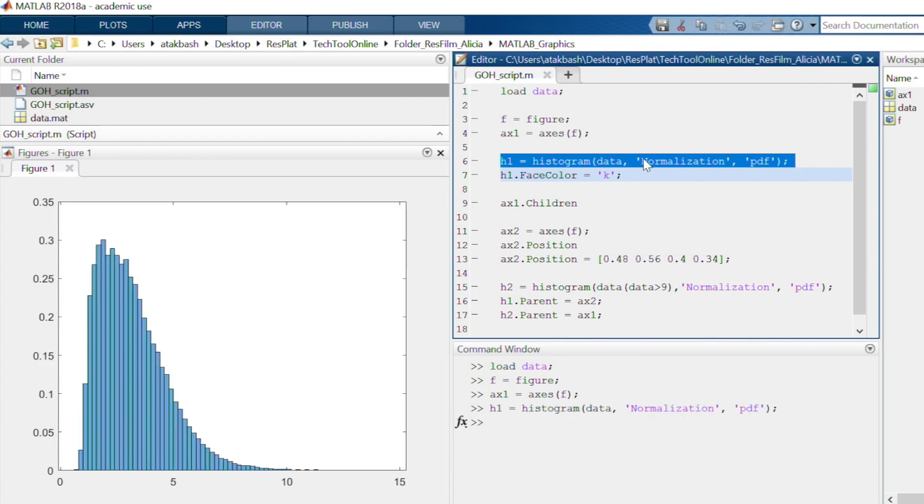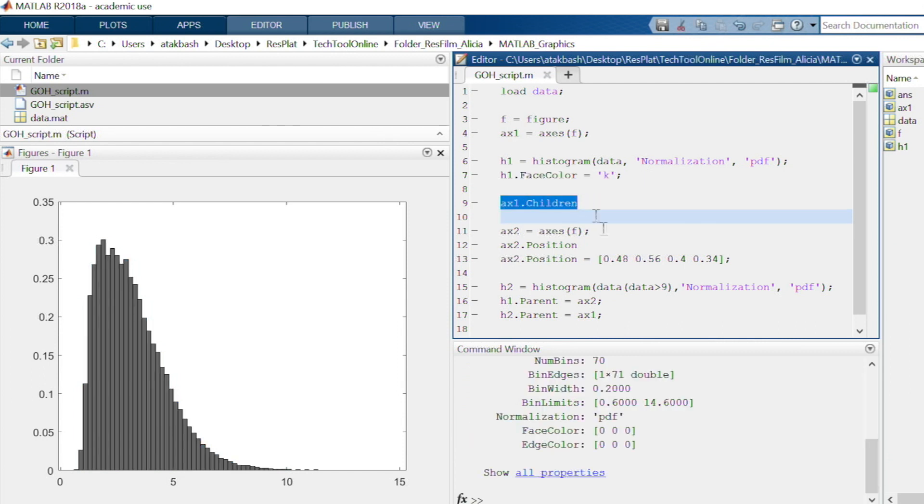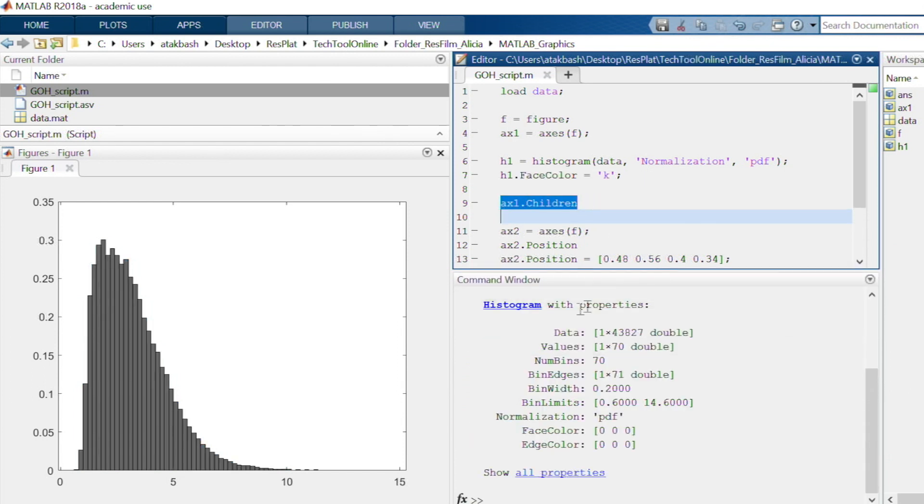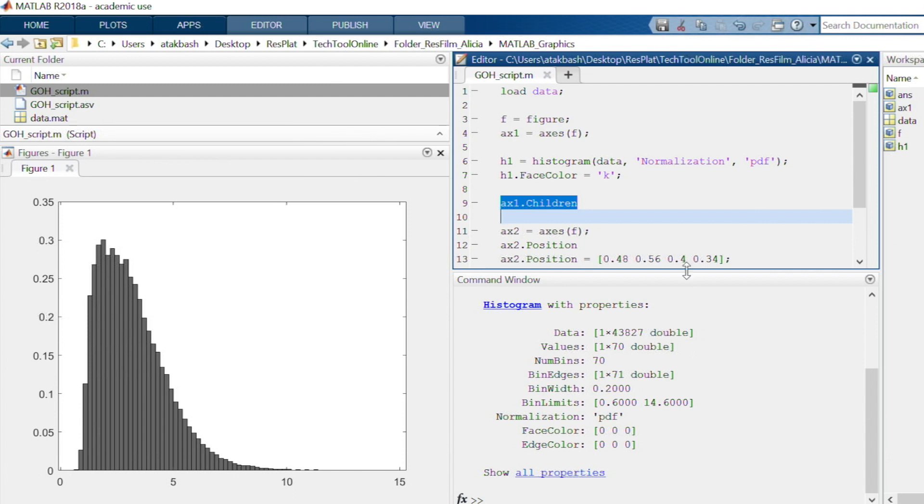In the next step, I can use the handle h1 and the MATLAB dot notation to modify the face color of the histogram and set it to color black. Okay, I mentioned before that a plot is the children of an axis object, so when I obtain the children property of my axis using its handle, it should show me the histogram object.